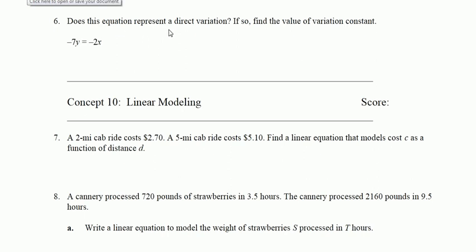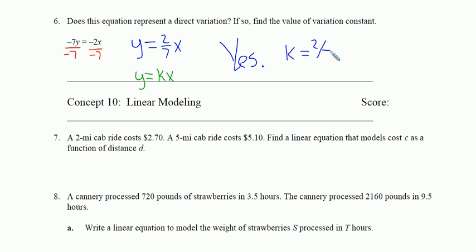Number six just asked, does this equation represent a direct variation? If so, find the value of variation constant. Well, this does represent a direct variation. If I divide both sides by negative 7, I get y is equal to 2/7 x. So I see a direct variation, I see a y equals kx type form here. When I have exactly that form, no plus or minus other value, I have a direct variation equation. So the answer is yes, and the variation constant k is 2/7.